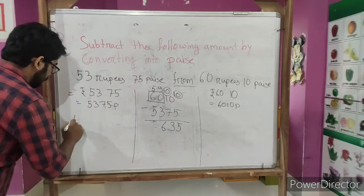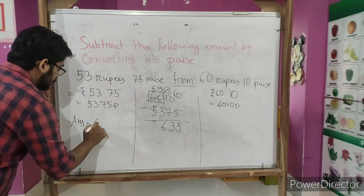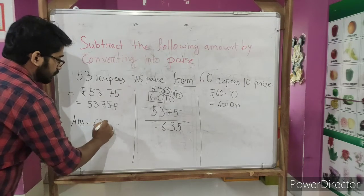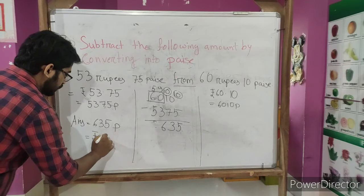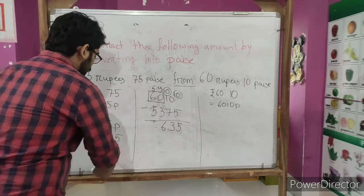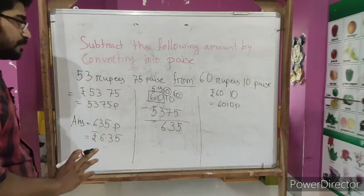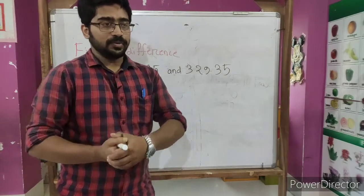So answer will be 635 paise, or we can write rupees 6.35, that means 6 rupees 35 paise. Clear. So now the next one.